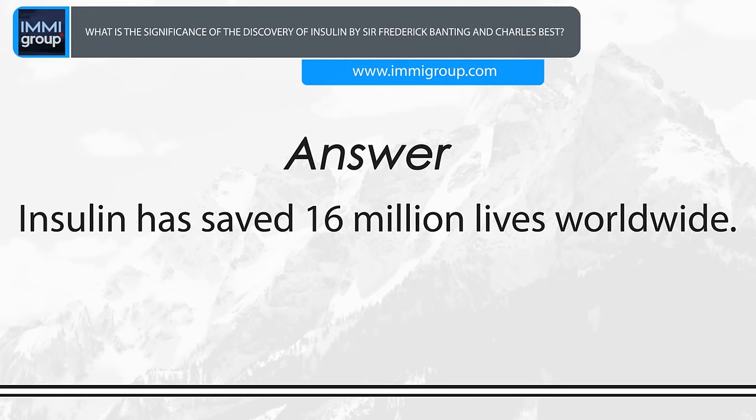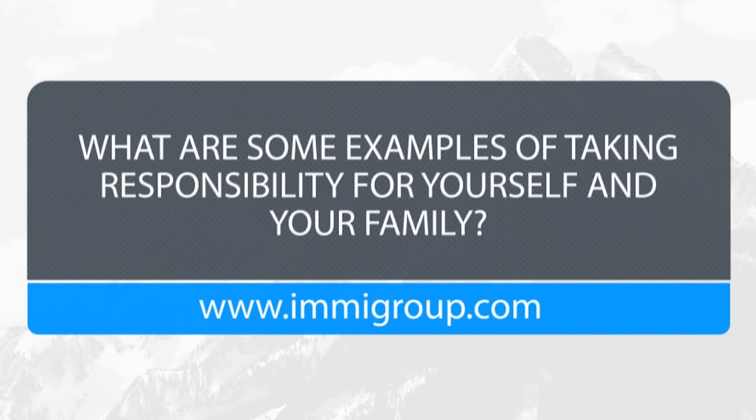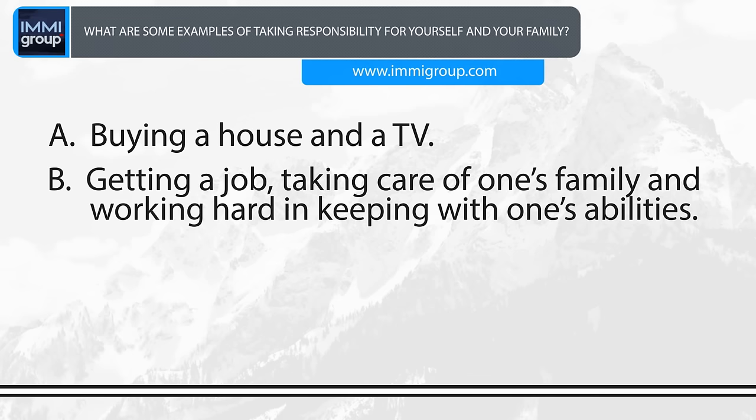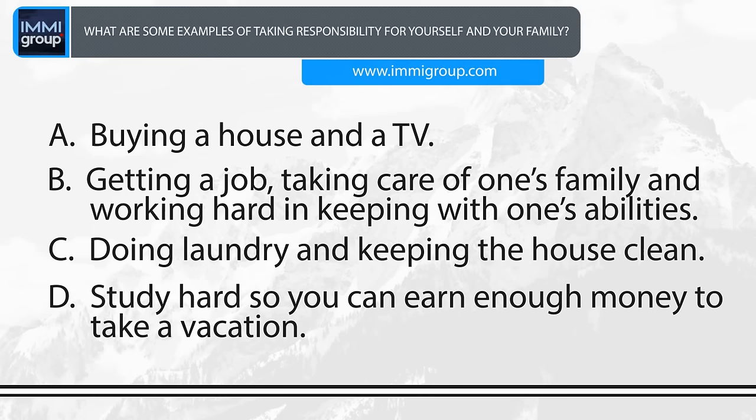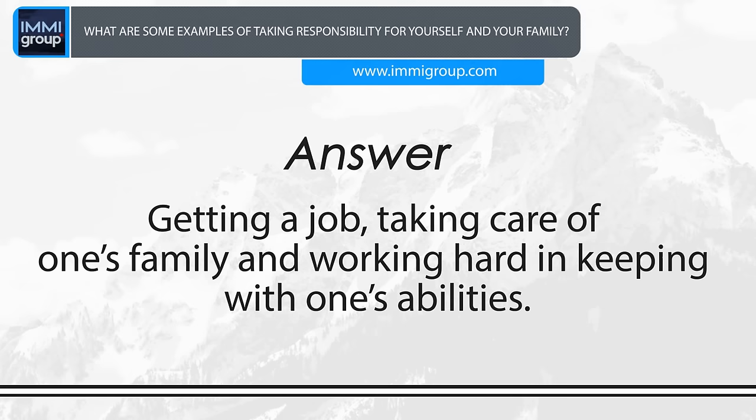What are some examples of taking responsibility for yourself and your family? A. Buying a house and a TV. B. Getting a job, taking care of one's family and working hard in keeping with one's abilities. C. Doing laundry and keeping the house clean. D. Study hard so you can earn enough money to take a vacation. Answer: Getting a job, taking care of one's family and working hard in keeping with one's abilities.